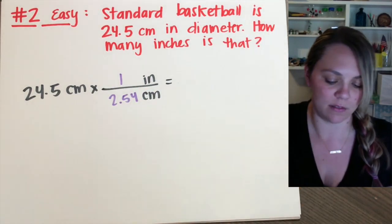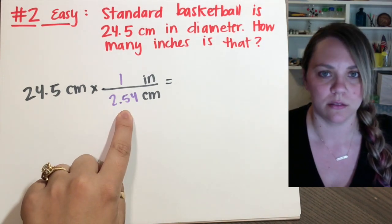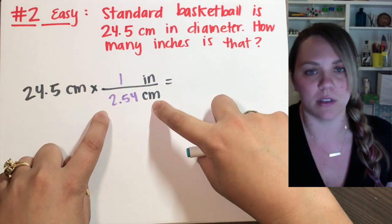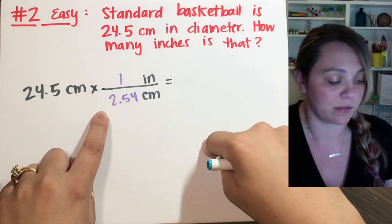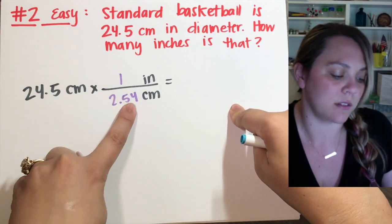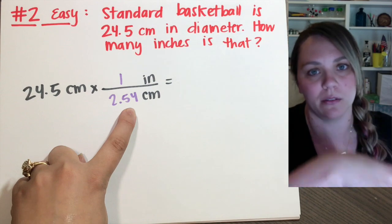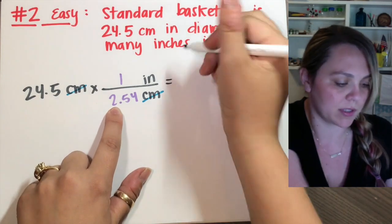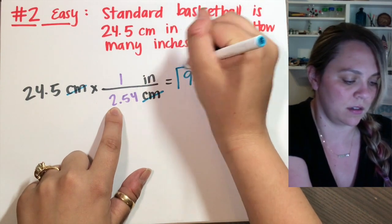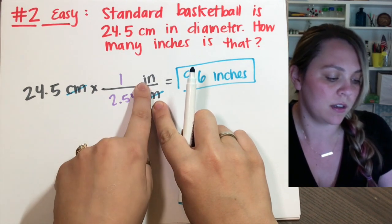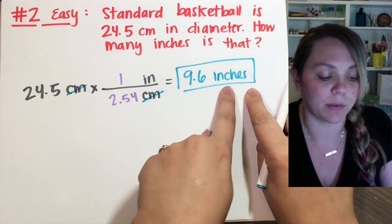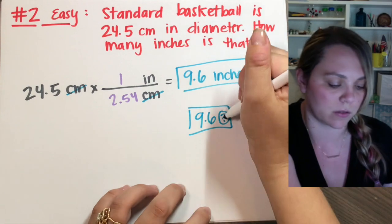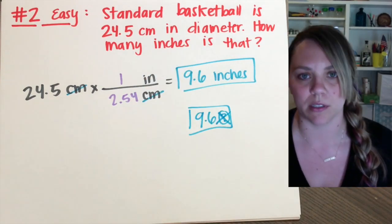Step three — do math. Slightly trickier because now you actually have to divide. In your calculator you'd type 24.5 times 1 divided by 2.54. If it's on the denominator, you divide by it. Centimeters and centimeters cancel, and 24.5 divided by 2.54 is 9.6 inches. Make sure when you're doing conversions you write out the final units. Don't give naked numbers — don't give your answer as just 9.6 with nothing. Is it 9.6 elephants? So please, no naked numbers — put your units.